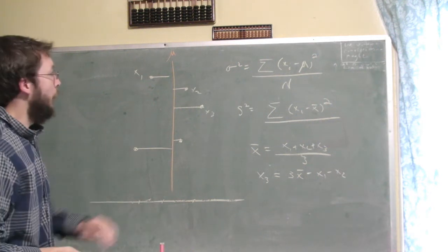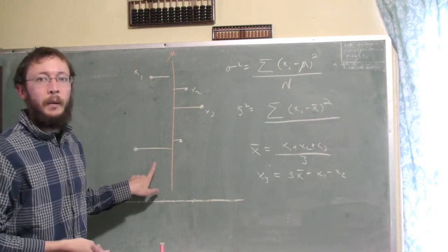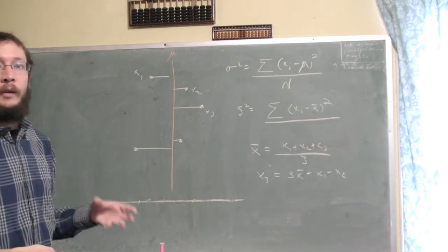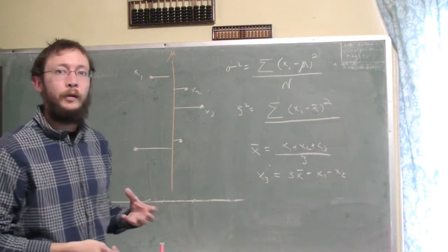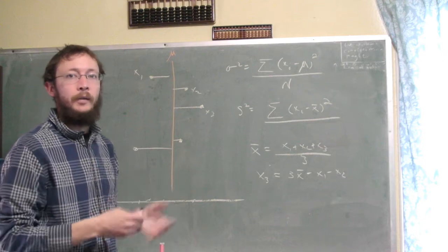But unfortunately this is signed, where these values are going to be positive, these values are going to be negative, and what happens is the sum of those distances actually adds to zero. It's a mathematical fact that the signed distance from the mean always adds to zero.